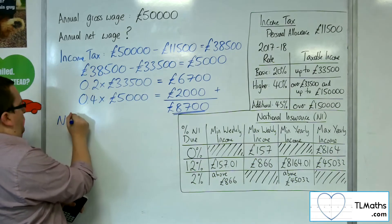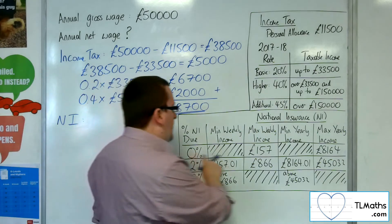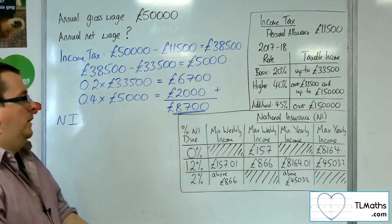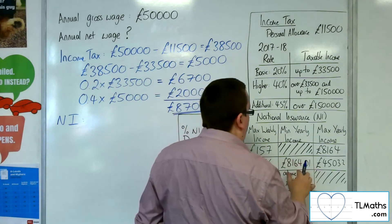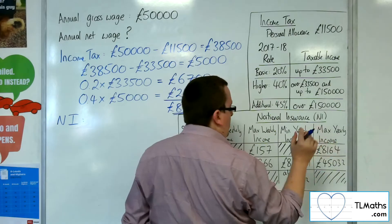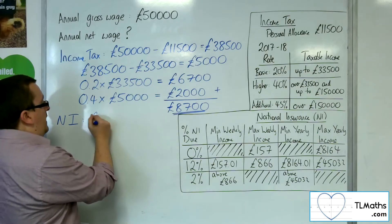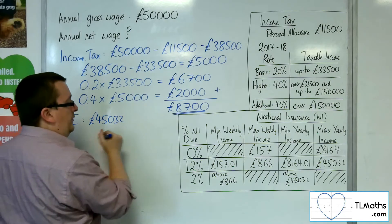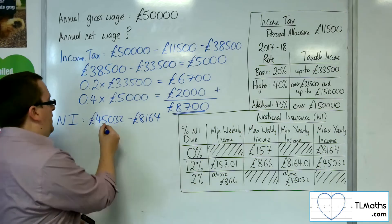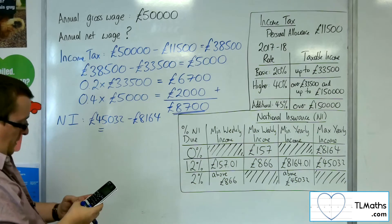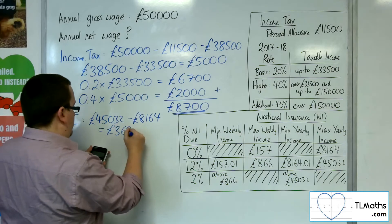Now for National Insurance. The first £8,164 you don't pay anything. But then we're going to pay 12% on any amount between £8,164 and £45,032. So we need to work out £45,032 take away £8,164, because I'm going to get charged 12% on that. £45,032 take away £8,164 gets me £36,868.